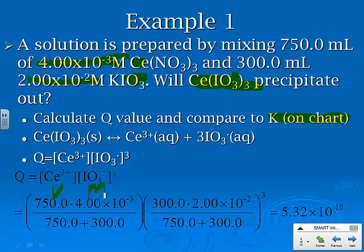So they're figuring out the moles, and we're dividing it by the new total volume. I know this looks like a lot of numbers, but this is our new total volume. We have to raise this one to the third power. So we get a Q value equal to 5.32 times 10 to the negative 10.